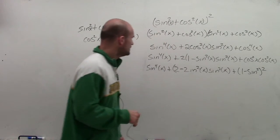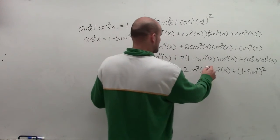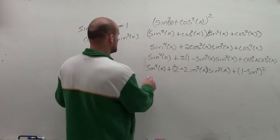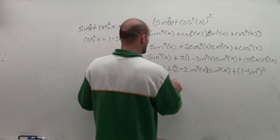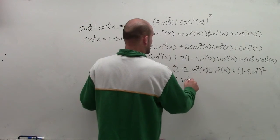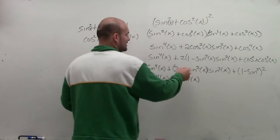All right, so this needs to be multiplied by sine of x squared. So therefore, by multiplying this through, I get sine to the fourth of x plus 2 sine squared of x.